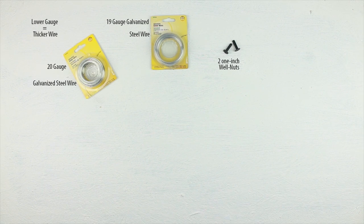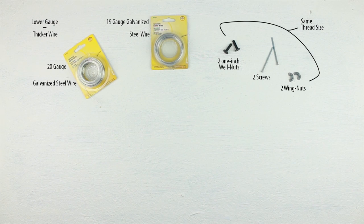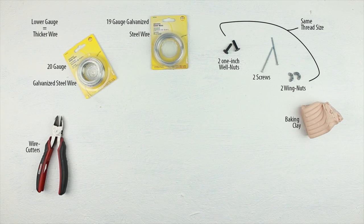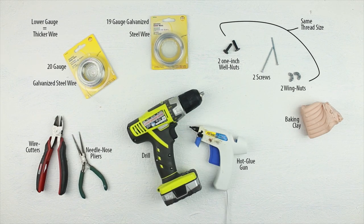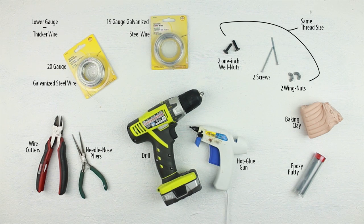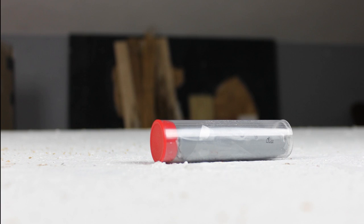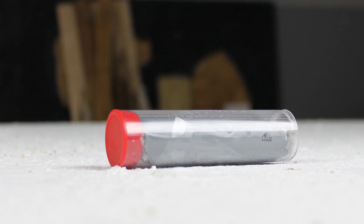So you're going to need galvanized wire, 19 and 20 gauge, two well nuts, two screws, two wing nuts, all with the same thread size, baking clay, wire cutters, needle nose pliers, a drill, hot glue gun, and epoxy putty. Just so you know, the epoxy putty smells really bad.